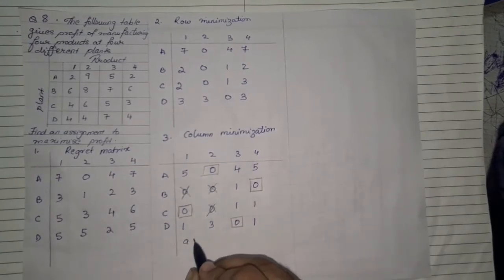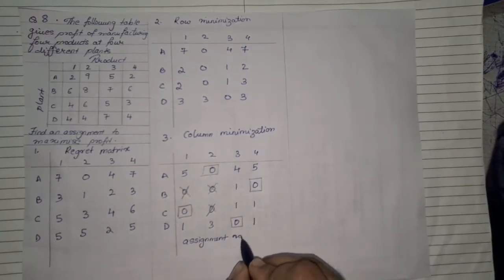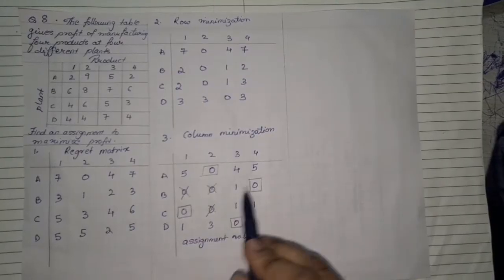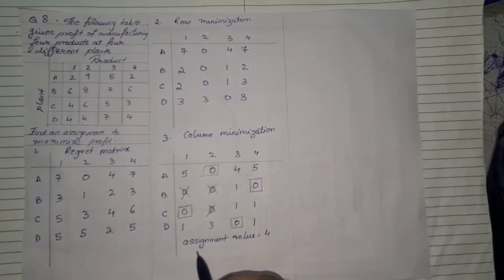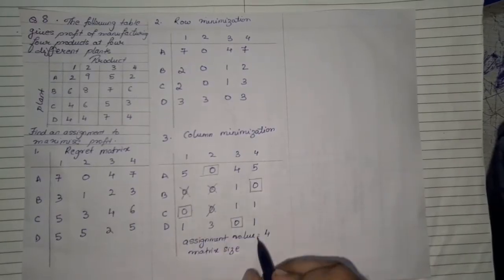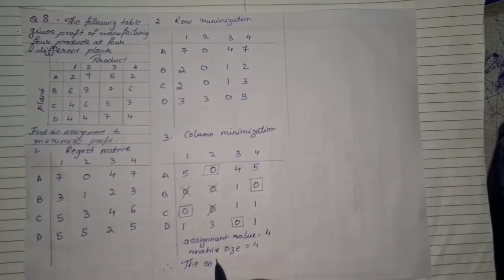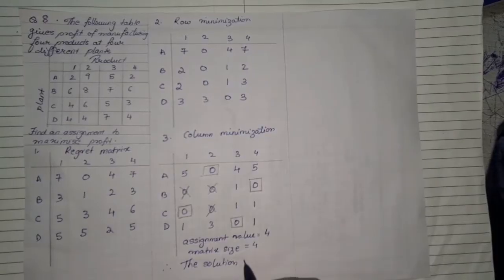Once you do that we'll check now the assigned values. So the number of assigned the assignment values if you check we have one two three four we have four assigned values and matrix size. If you check the matrix size your matrix size is also four by four therefore we can say that the solution is optimal.